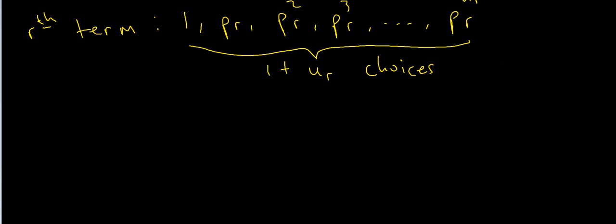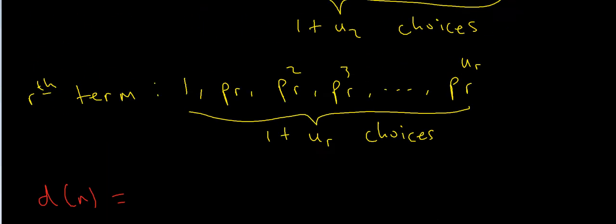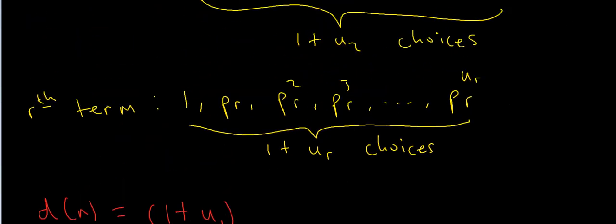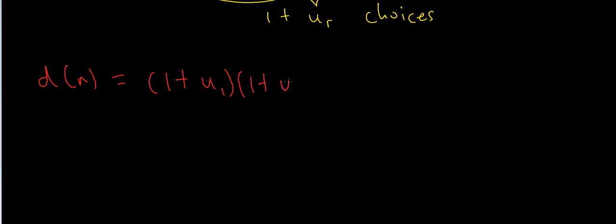This tells us that the number of possible divisors of n — since each combination of choices is a divisor — is (1+u1) times (1+u2) times the total possibilities for each term, all the way up to (1+ur). That is exactly where the formula for d(n) comes from: it's simply (1+u1)(1+u2)···(1+ur).